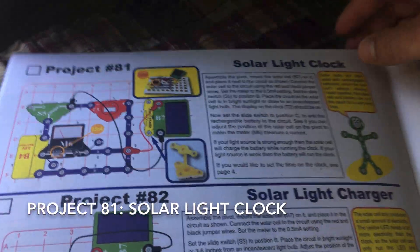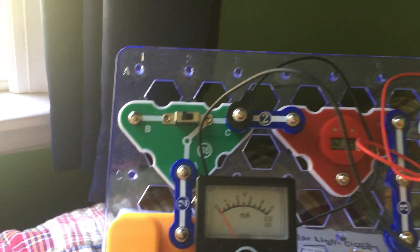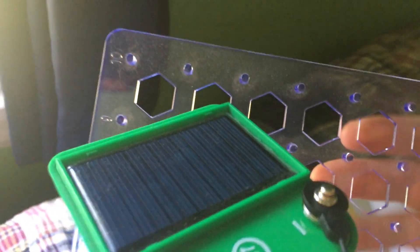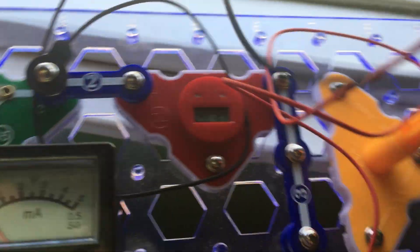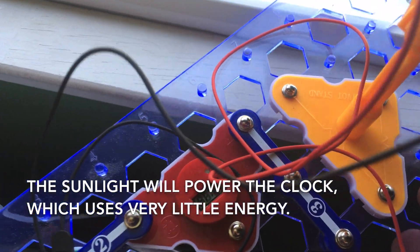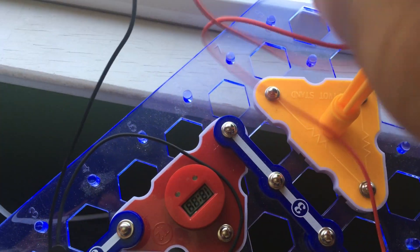Here is the solar light clock. We will have the slide switch set to position B. And make sure that the solar cell is near either sunlight or an incandescent lamp. And the clock will power up if the light is sufficient. Move those wires out of the way.